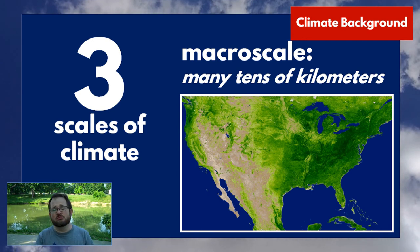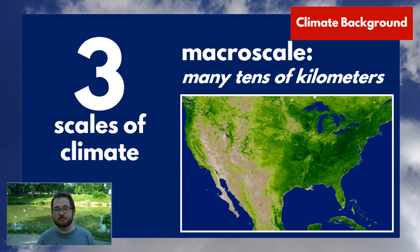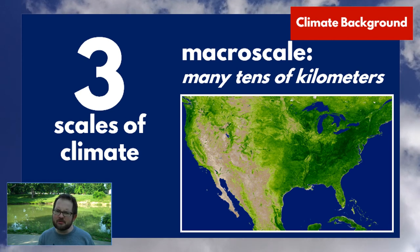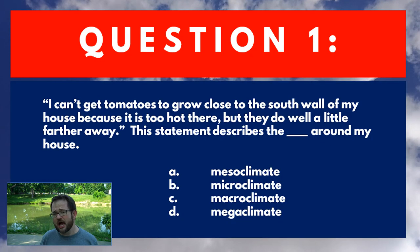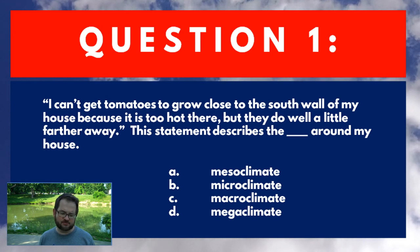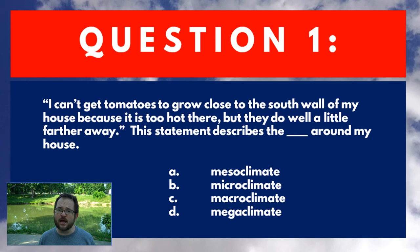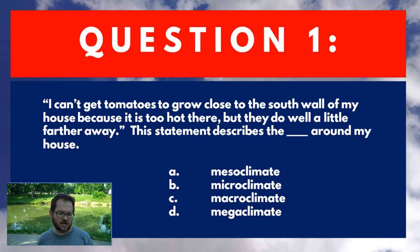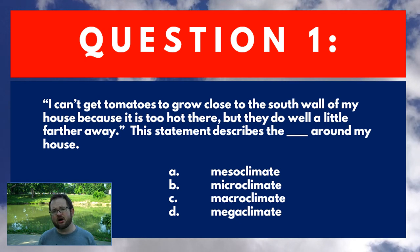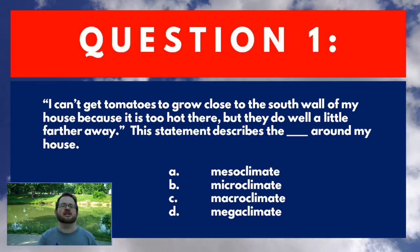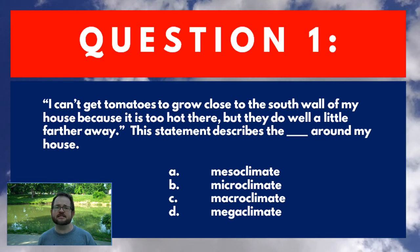All of this is in contrast to global climate, which means the overall temperature of the planet. That's a different set of challenges we talk about in different lectures. Before we go on, I want you to answer one question to make sure you understand the different scales of climate. The statement is: 'I can't get tomatoes to grow close to the south wall of my house because it's just too hot there, but they do well a little farther away.' This statement describes the blank around my house. Your choices are meso-climate, micro-climate, macro-climate, and mega-climate. Follow one of the links below this YouTube video and it'll take you to a little feedback about your answer, then we'll move on to the second part of the lecture.